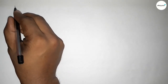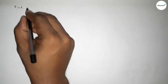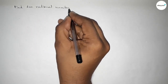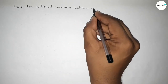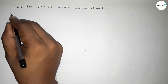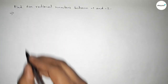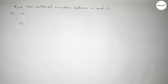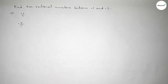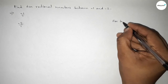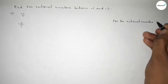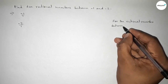Hi everyone, welcome to SI Share Classes. Today in this video we have to find out 10 rational numbers between minus 1 and minus 2. So let's start the video. First of all, write down the given two numbers: minus 1 and minus 2. Now we can write minus 1 as minus 1 over 1, and minus 2 as minus 2 over 1. Now, discussing here an important method for finding 10 rational numbers between any two numbers.